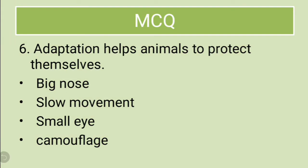The sixth MCQ: adaptation helps animals to protect themselves. Which adaptation? Big nose, slow movement, small eye, or camouflage? Camouflage means the color of their skin or outer cover matches with the surrounding — like the tiger, which has stripes that match with the surrounding and help it hide in the jungle.